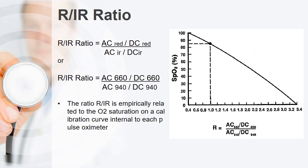The R to IR ratio — red to infrared ratio — is the ratio of the AC and DC current of the red light to the AC and DC current of the infrared light. This ratio is empirically related to oxygen saturation on an internal calibration curve specific to each pulse oximeter. On the calibration graph, at an R:IR ratio of 0.4, SpO2 is 100%, and the critical value is that when R:IR ratio equals 1, SpO2 is approximately 85%.